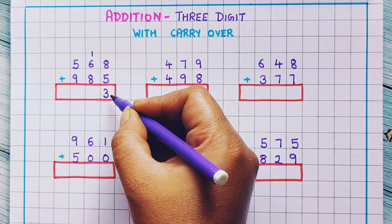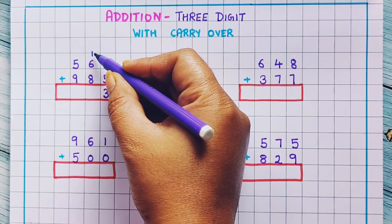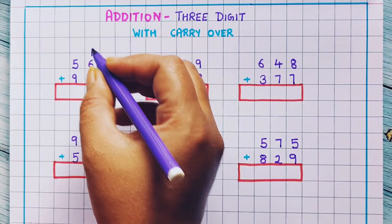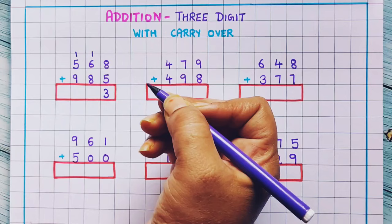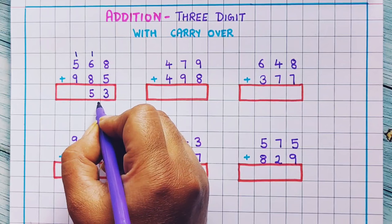Now let's do the tens place: 8 plus 6 plus 1. 8 plus 1 is 9, and 9 plus 6 is 15. Now again, how will I write 15? I will put the 1 in the hundreds place as a carryover and write 5 at the bottom in the tens place.